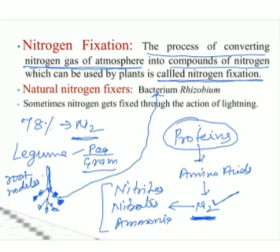That bacteria is called Rhizobium. This Rhizobium bacteria converts the atmospheric nitrogen into compounds — nitrites, nitrates, and ammonia. These compounds dissolve in water, and through the roots, plants absorb them. So the nitrogen from the atmosphere comes into the body of plants, and it is utilized to prepare proteins.